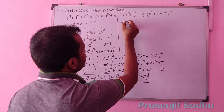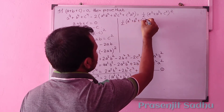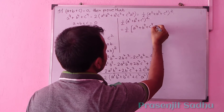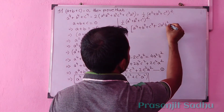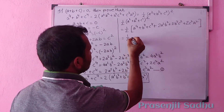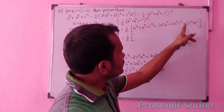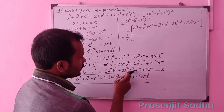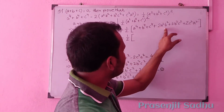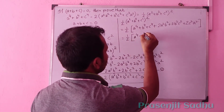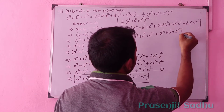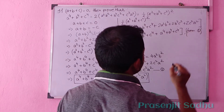The third part is half of (a² + b² + c²) whole square. Now we expand this: it becomes half of (a to the power 4 plus b to the power 4 plus c to the power 4 plus 2a²b² plus 2b²c² plus 2c²a²). We have already proved that 2a²b² + 2b²c² + 2c²a² is equal to a⁴ + b⁴ + c⁴.